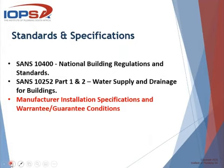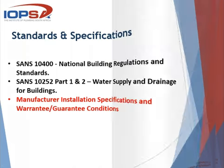First of all, we need to take cognizance of the standards and specifications. In this instance we will look towards SANS 10400, which is the national building regulations, and SANS 10252 Part 1 and 2, which covers water supply and drainage for buildings. Even more important is the manufacturer's installation specifications for warranties and guarantees. This is a very important point — we've had people recently having problems with warranty and guarantee claims due to incorrect installations.